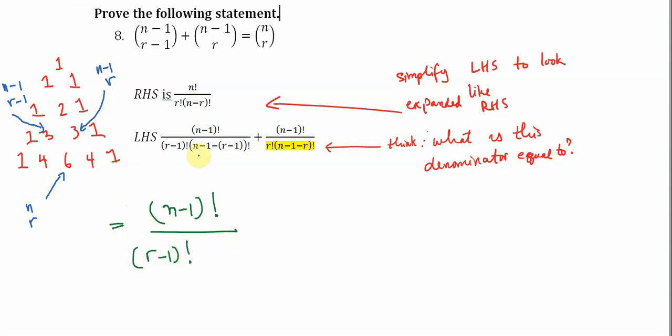And then this part right here, the n and the r is going to remain. So we have n minus r, and you have a negative one minus a negative one. So that's going to be gone altogether.